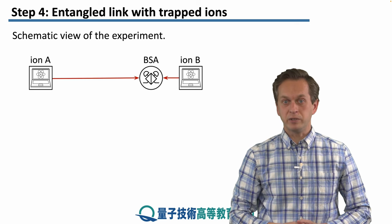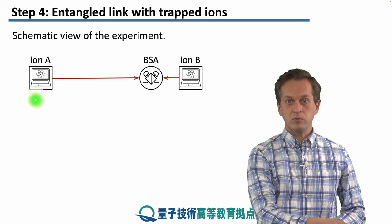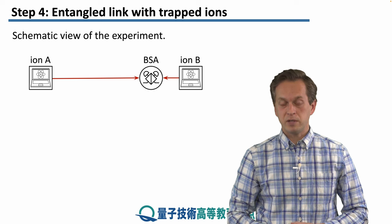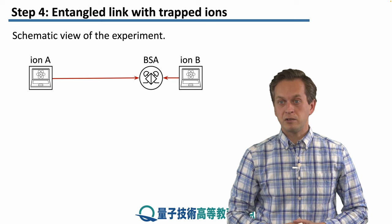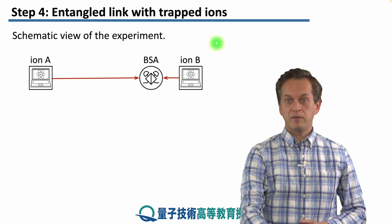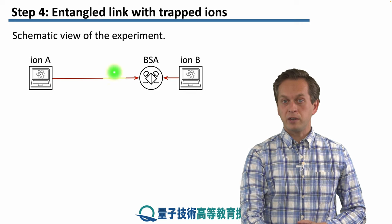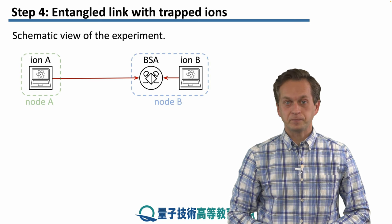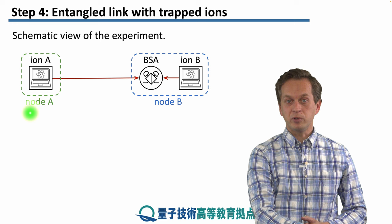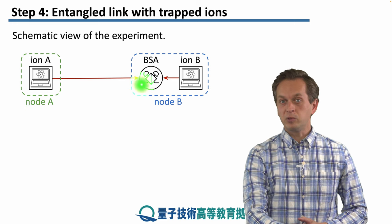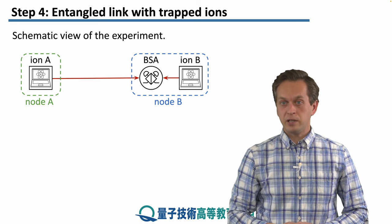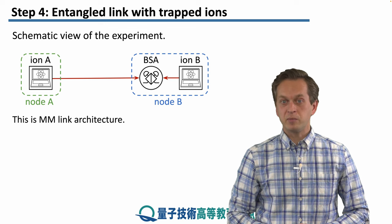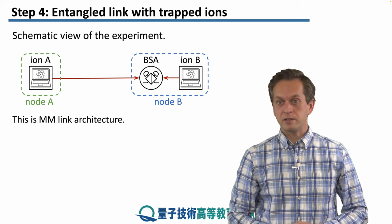Here's a schematic view of the experiment. We have two computational end nodes, ion A and ion B, that were both made to emit photons. This created a stationary qubit to flying qubit entanglement, and then the flying qubits were directed towards the BSA between the nodes, where they were made to interfere. Node A only had the computational end node, while node B had access to both the computational end node and the BSA. This is the memory-memory link architecture discussed in this module.